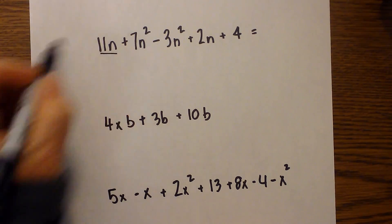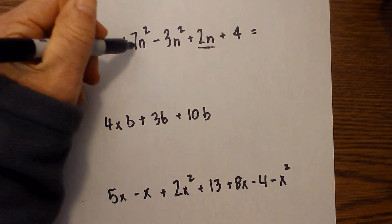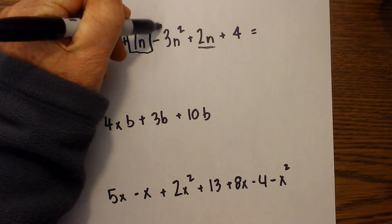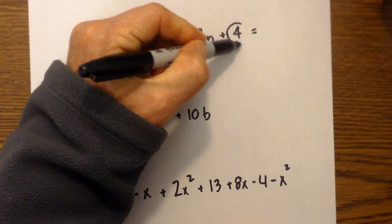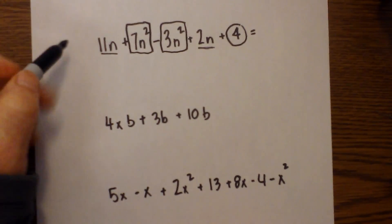We have 11n plus 7n squared minus 3n squared plus 2n plus 4. So, there is an n and here is an n. Let's put a box around the squared terms. And how about we circle the number? So now, we can kind of visually see the like terms.